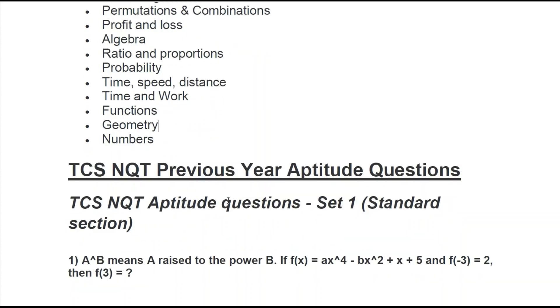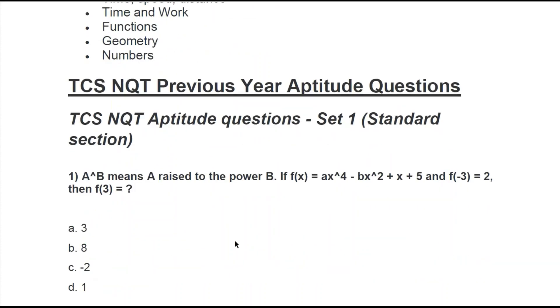Here are some previous year questions. Question 1: A to the power B means A raised to the power B. If f(x) = ax^4 - bx^2 + x + 5 and f(-3) = 2, then find f(3).